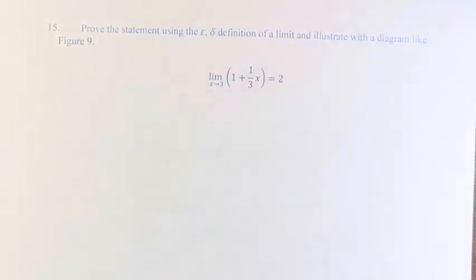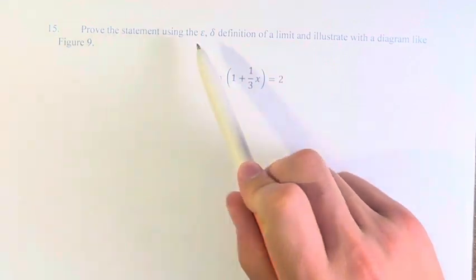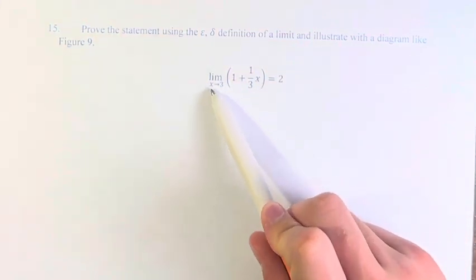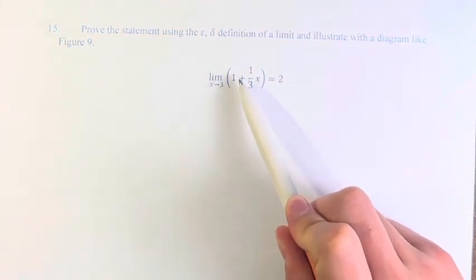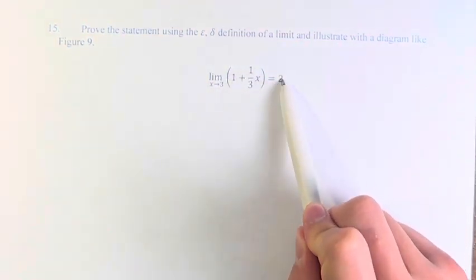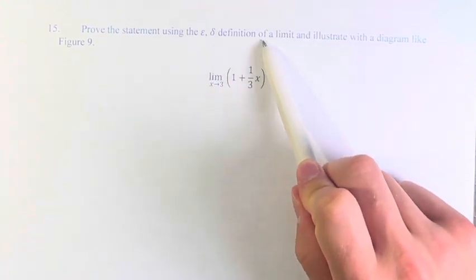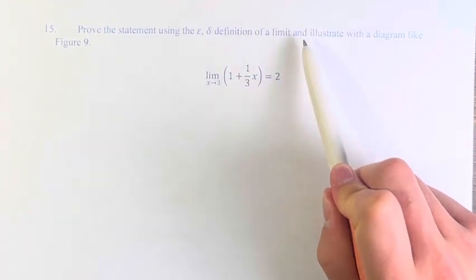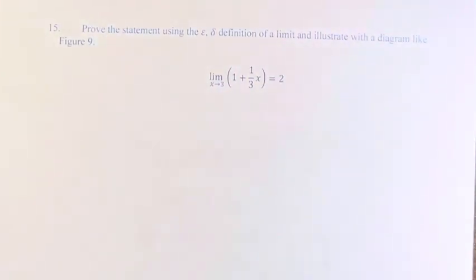Hello and welcome back to another video. In this problem, we're asked to prove the statement: the limit as x approaches 3 of 1 plus one-third x is equal to 2, using the formal definition of a limit and illustrating it with a diagram.